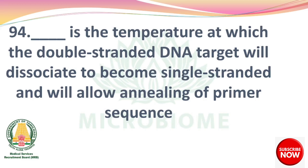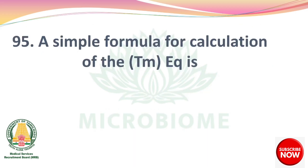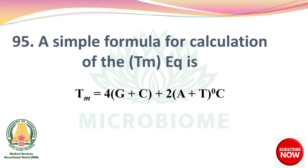Dash is the temperature at which the double-stranded DNA target will dissociate to become single-stranded and will allow the annealing of primer sequence — melting temperature (Tm). A simple formula for calculation of Tm is: Tm = 4(G + C) + 2(A + T) degrees Celsius, where G + C is guanine plus cytosine and A + T is adenine plus thymine.